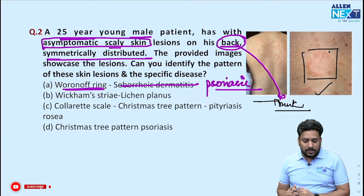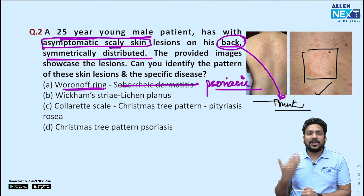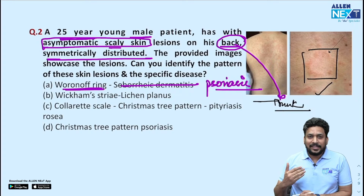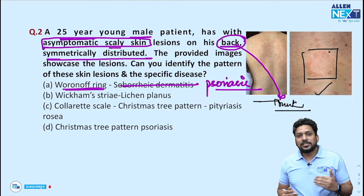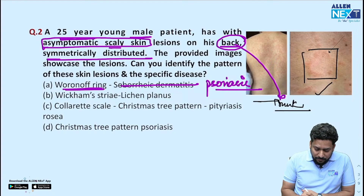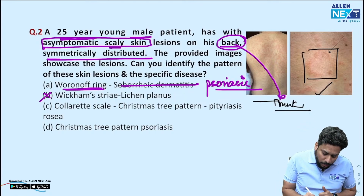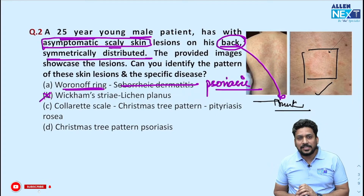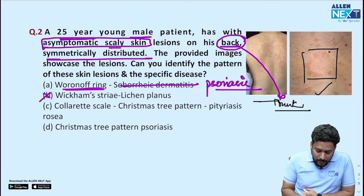Moving to the second option: Wickham's striae are seen in lichen planus. But is this a patient suffering from lichen planus? No, because lichen planus presents with purplish lesions, not pink. So that option is also incorrect.